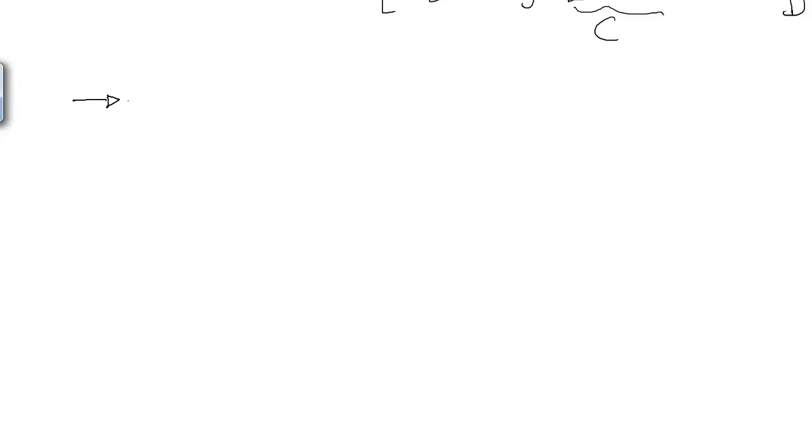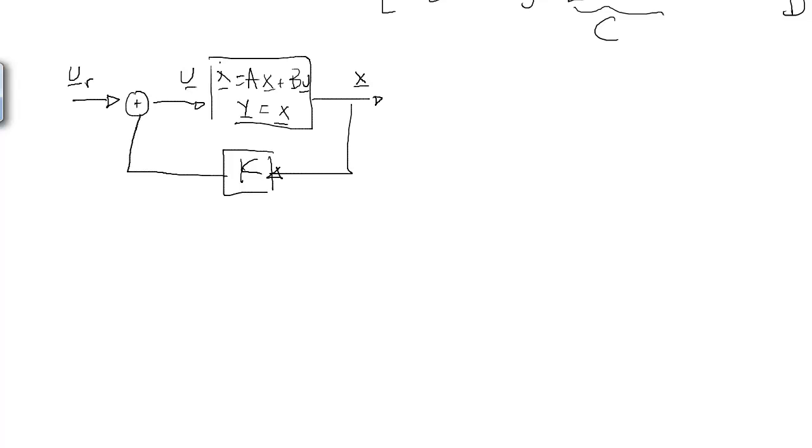We recognize that this system consists of a reference input that's fed into the plant, which is x dot equals AX plus BU. Here, y is just equal to x. So we have x coming out, and we're going to take x and feed it back through a gain K, which we have to determine, which is then subtracted from the reference input to generate the error, which is fed in as the input to the system.